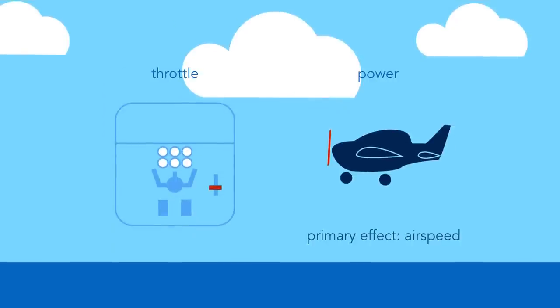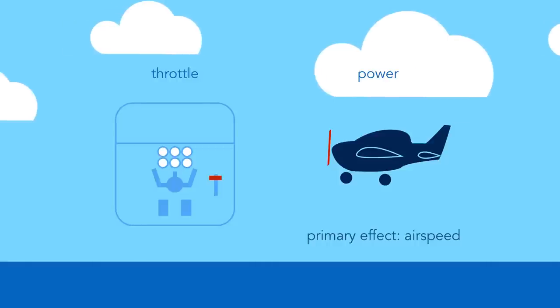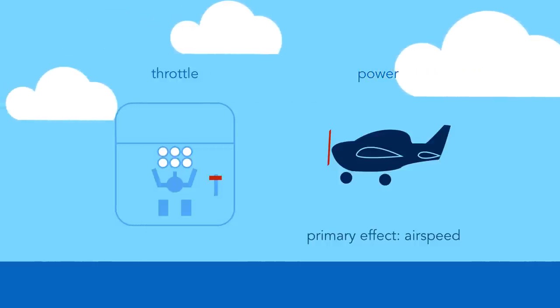Finally, there is power. The pilot controls the aircraft's power by the throttle control. For example, more power generated by the propulsion system produces the obvious primary effect of more airspeed.